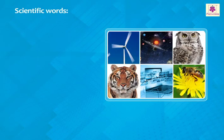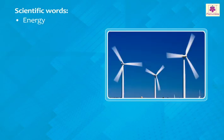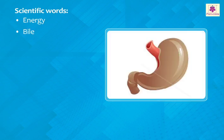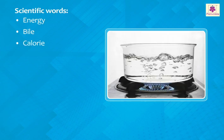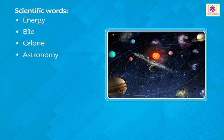The ability to do work and provide power is called energy. The digestive juice released from the liver and stored in the gallbladder is called bile. A calorie is the amount of energy needed to raise the temperature of 1 gram of water by 1 degree Celsius, from 15 degrees to 16 degrees, at atmospheric pressure.